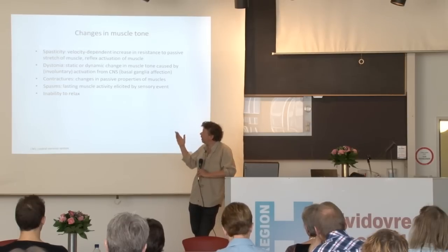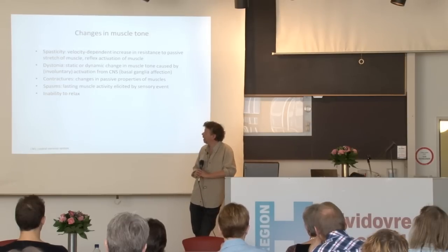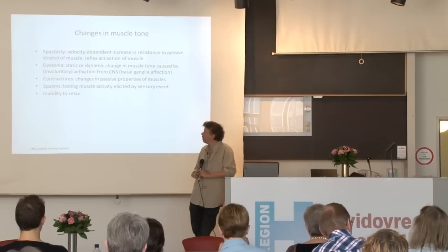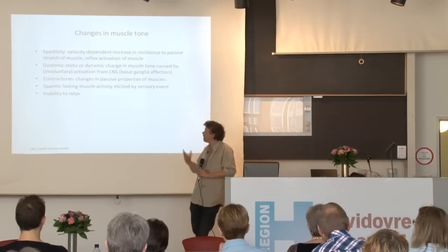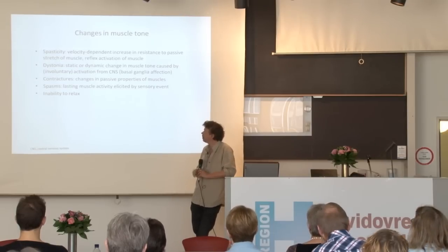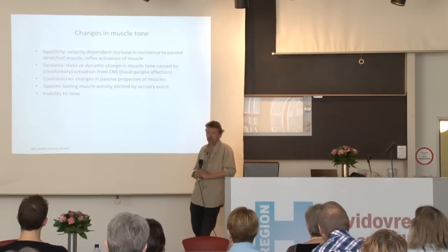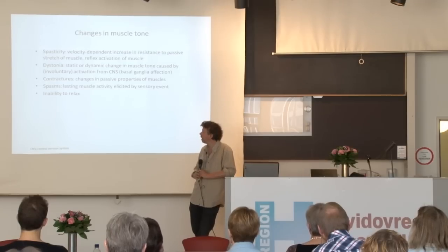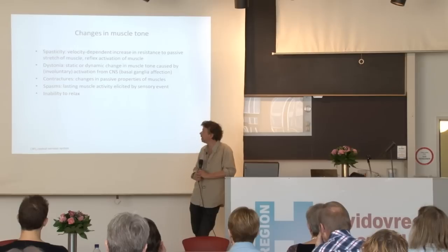We have other changes in muscle tone also. There's definitely something called dystonia, which is a static or dynamic change in muscle tone, which we normally see as a part of basal ganglia disorders. We definitely also see it in cerebral palsy. We have various syndromes where we do see these changes in muscle tone, which we would then call dystonia.